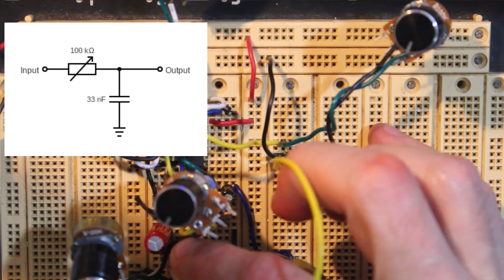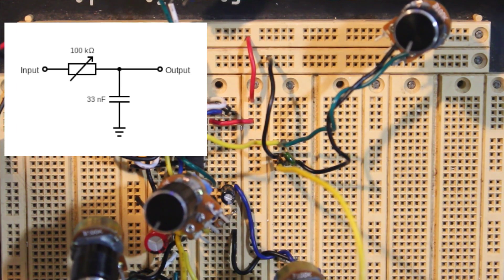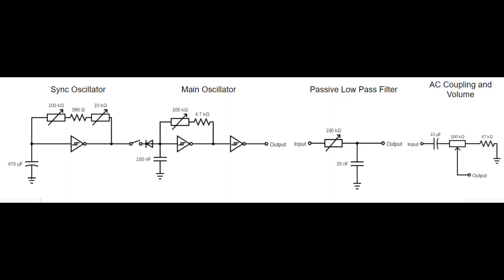Here's a schematic linked in the description for the oscillator, low-pass filter, and output all together.